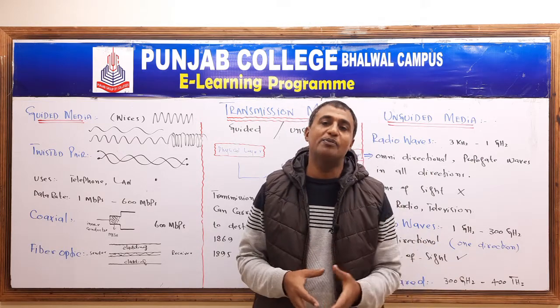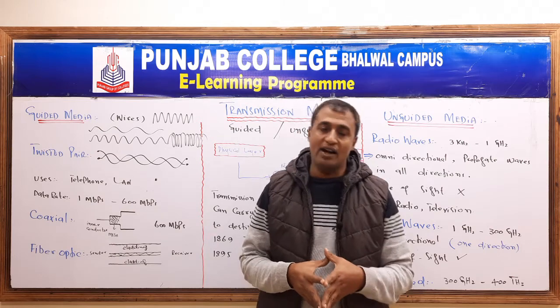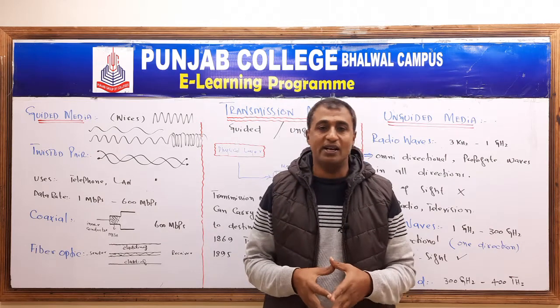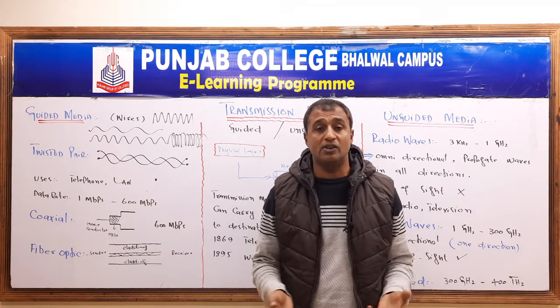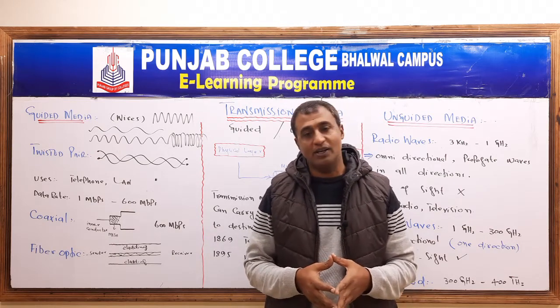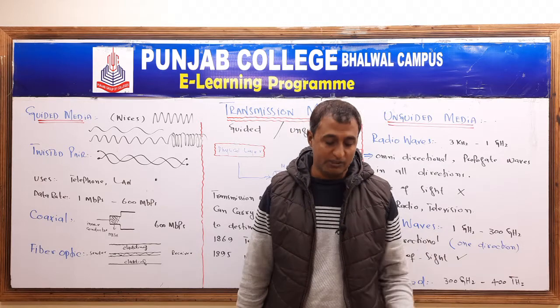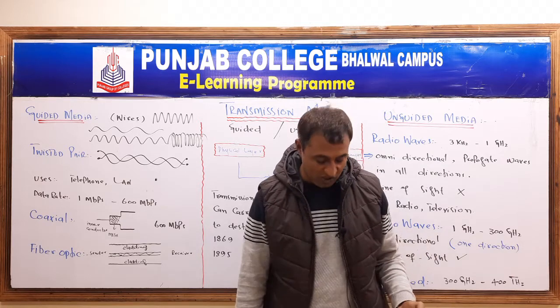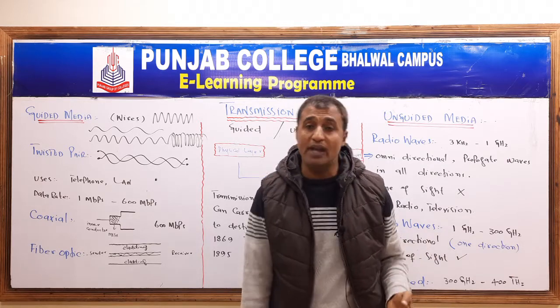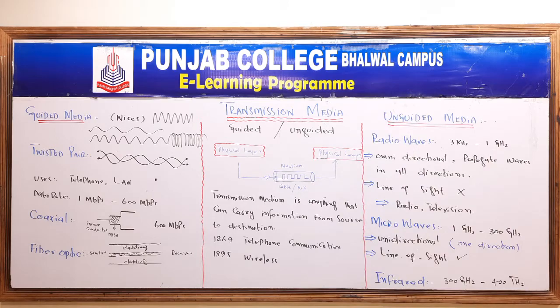So students, we have discussed transmission media. We have seen that guided media uses wires through which our data moves from source to destination. We have seen that unguided or wireless media uses signals through which our data travels from source to destination. I hope you will understand this — what is the difference between guided and unguided media, and what is the transmission medium. Inshallah, we will see you in the next lecture. Thank you. Allah Hafiz.